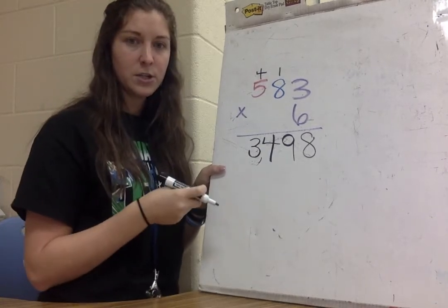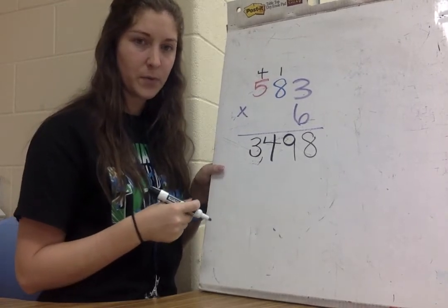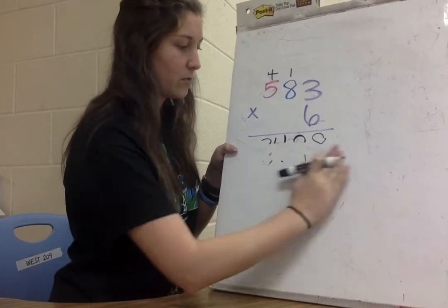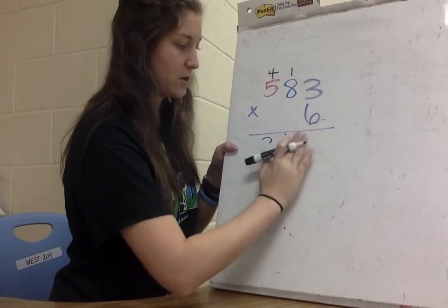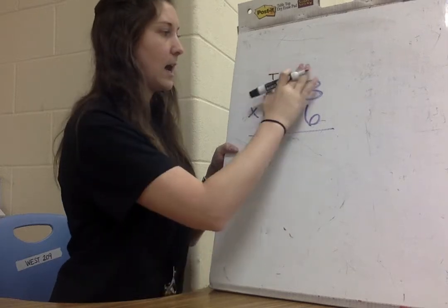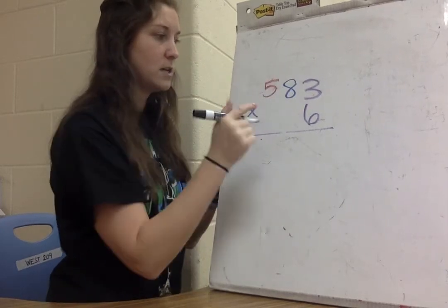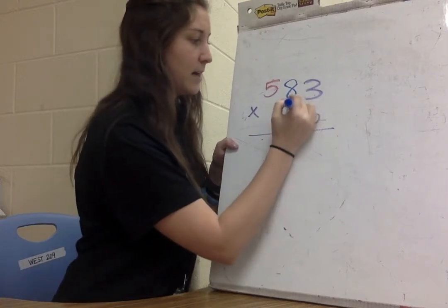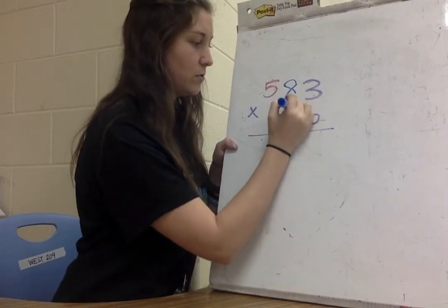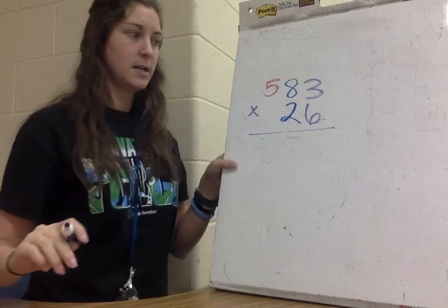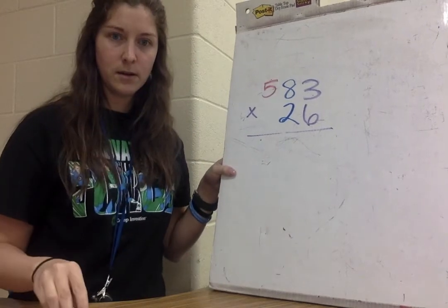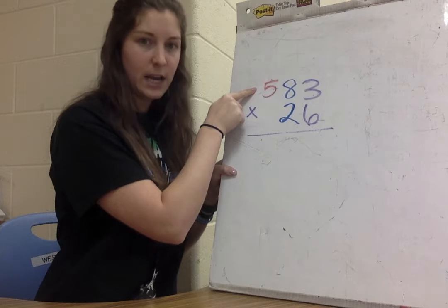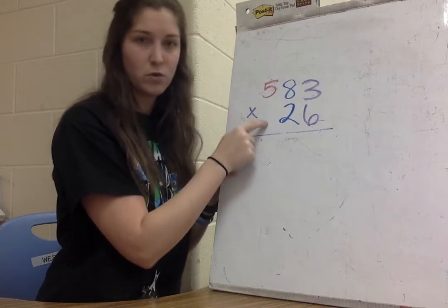Now we're going to step our game up a little bit and try this with a two-digit number. I'm going to erase my answer and leave all of this the same, just adding a 2 here. So now I've got 583 times 26.